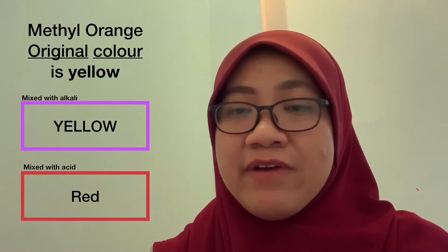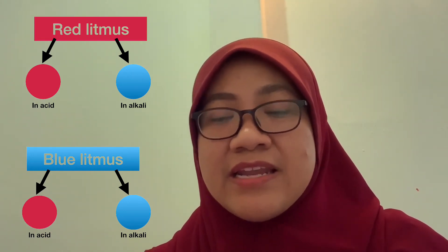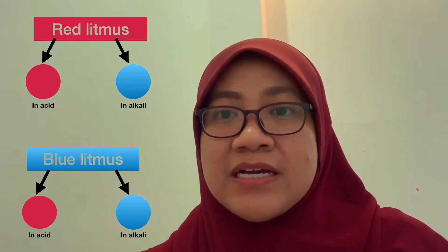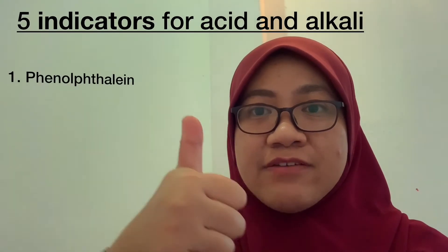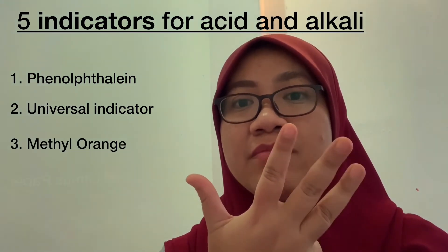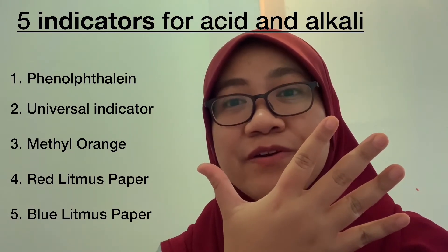The next two are very common: blue litmus paper and red litmus paper. Red litmus paper stays red in acid but changes to blue in alkaline. Blue litmus changes to red when immersed in acid but stays blue in alkaline. To recap, the five indicators we've learned are: phenolphthalein, universal indicator, methyl orange, red litmus, and blue litmus paper. Remember these five and their color changes.